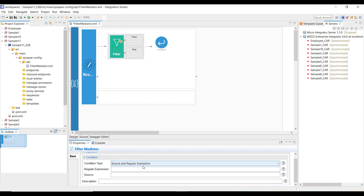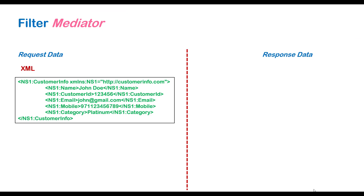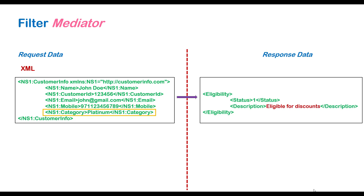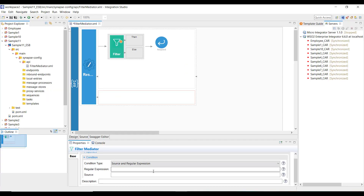Before I step into the demo, let me show you the request and response messages we are expecting. I'll be demonstrating both XML and JSON versions of a request message. With XML, I'm going to use a customer info XML having five child tags, and the condition is going to be executed against the category field. Once a condition is satisfied, I'm expecting a response with a tag called description saying eligible for discounts. If the condition is not satisfied, the description will have the value not eligible.